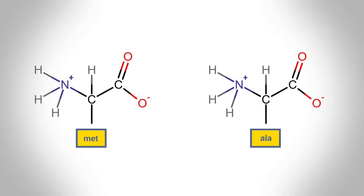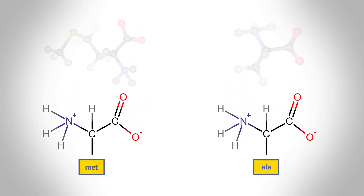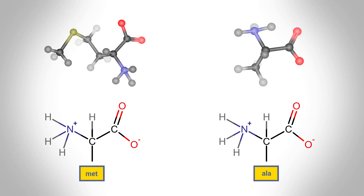During protein synthesis, peptide bonds link amino acids together in the order specified by DNA instructions. In this case, the first two amino acids in the protein are methionine and alanine. Here are ball and stick models of these amino acids.